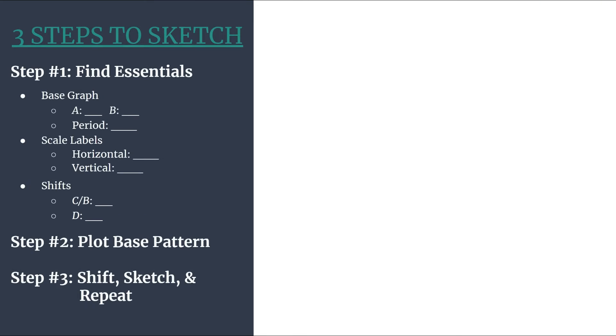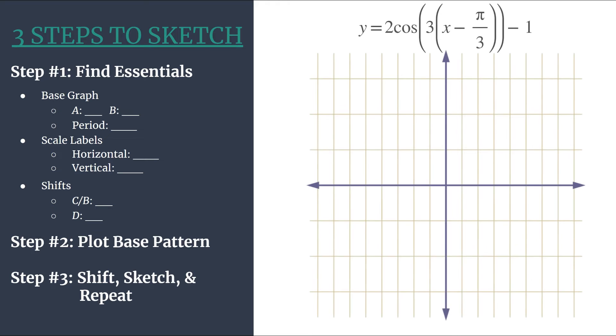Let's move into our method. We have our template here on the left and our equation and grid on the right. We've talked about our equation is in that general form of a shifted cosine equation: A cosine bx minus c plus d. So we will work from here and start with step one. Let's find the essentials.